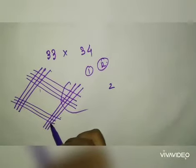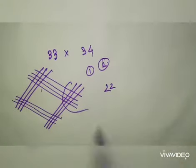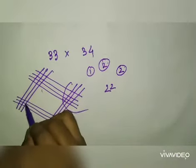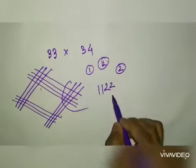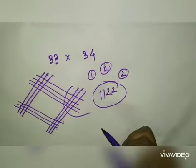1 is equal to 22. 2 is equal to 22. 33 into 34 is equal to 1122.